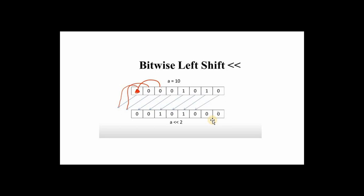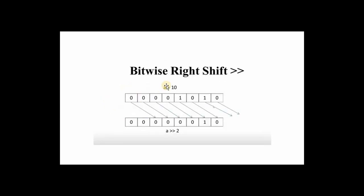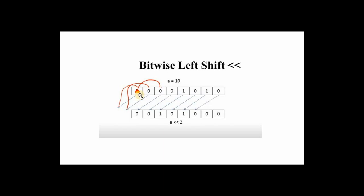For right shift with the number 10 shifted right by two: the two zeros on the right are skipped first, and each bit shifts to the right. The leftmost positions are then filled. Right shift starts from the right and ends on the left, which is the inverse of left shift which starts from the left and ends on the right.